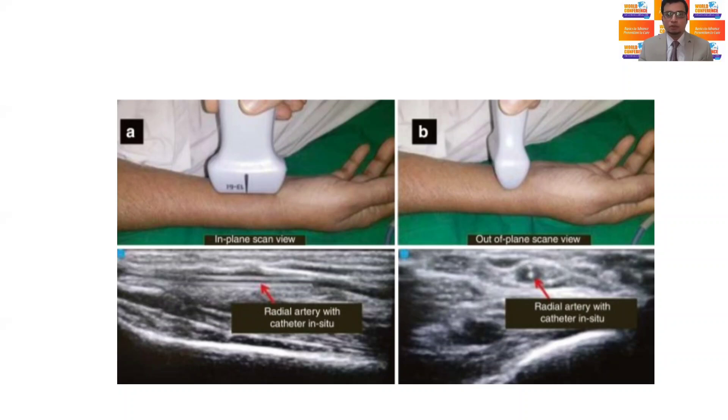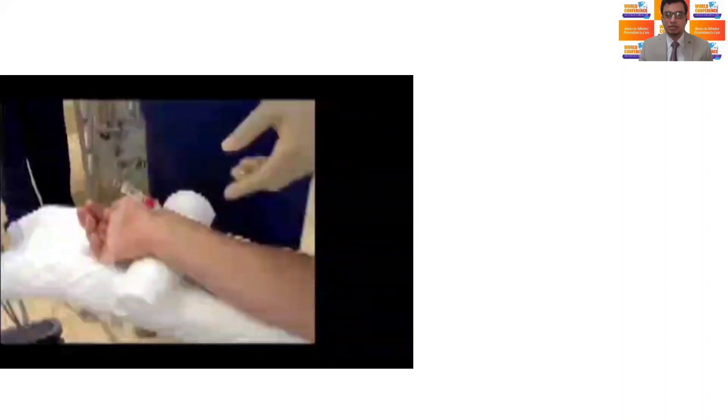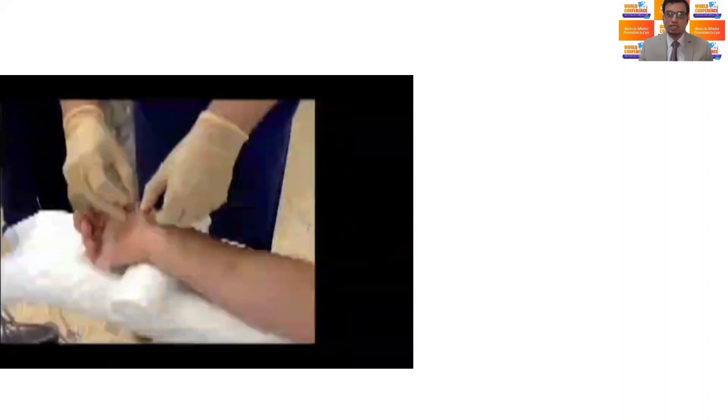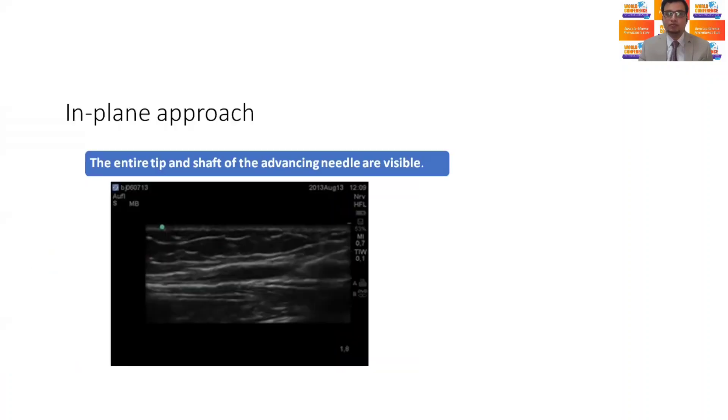Using in-plane approach, the radial artery is scanned in-plane. The long axis of probe is kept in line with the long axis of artery so that it scans the longitudinal section of the artery. The advantage of this approach is the real-time visualization of tip of the needle entering inside the lumen. However, it requires good expertise to hold and stabilize the probe during the procedure.